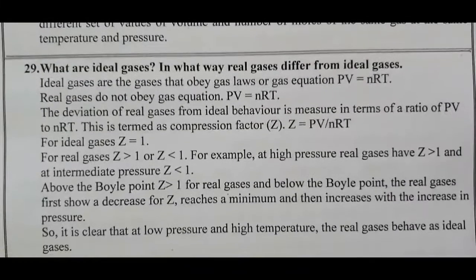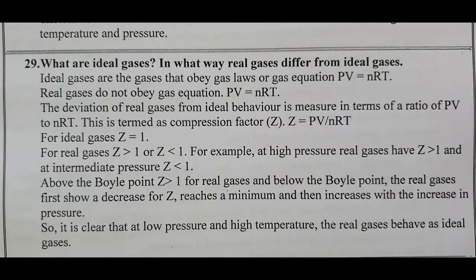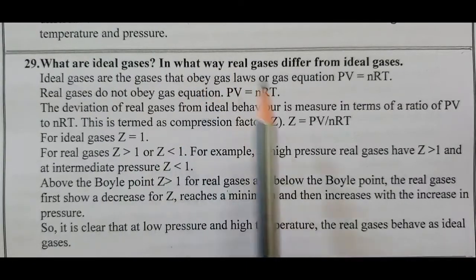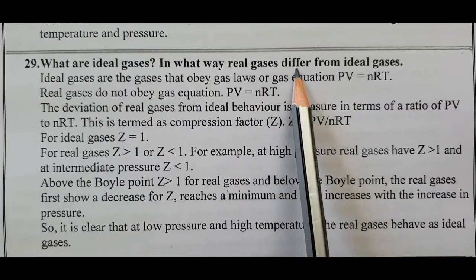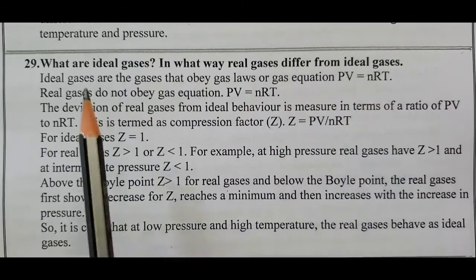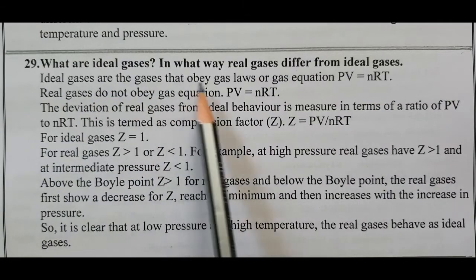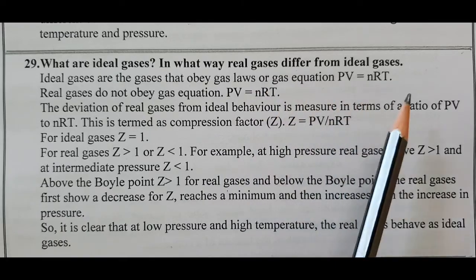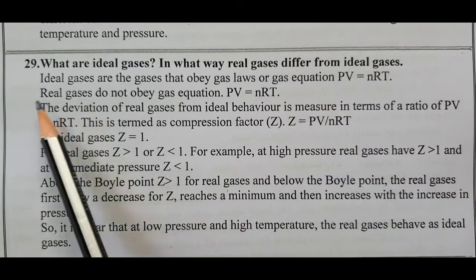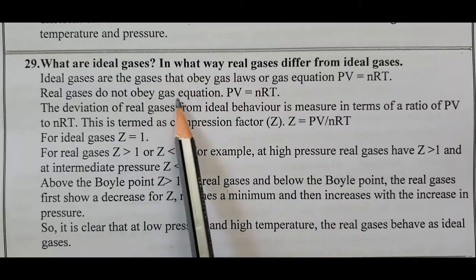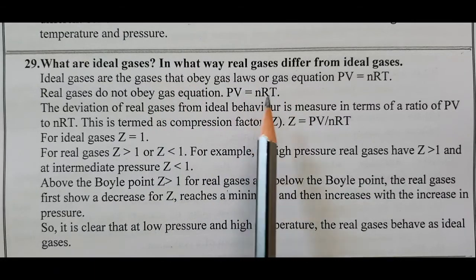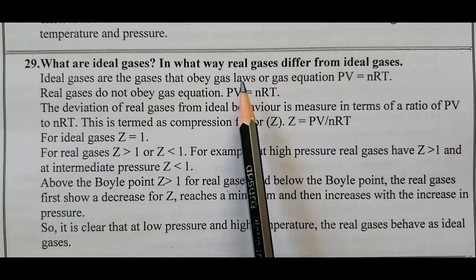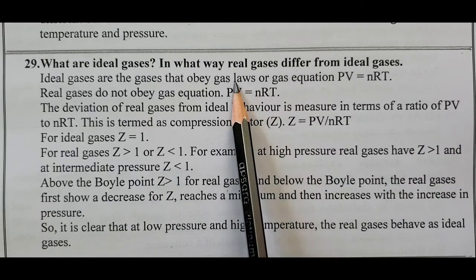Question number 29: What are ideal gases? In what way do real gases differ from ideal gases? Ideal gases are gases that obey the gas laws or the gas equation PV = nRT. Real gases do not obey the gas equation PV = nRT. Our gas laws — Boyle's law, Charles's law, Gay-Lussac's law, Avogadro's hypothesis — are all ideal gas assumptions.